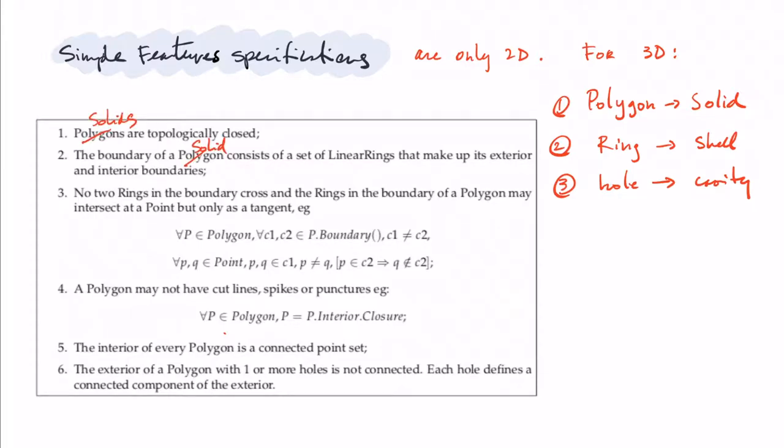Polygons become solids, rings become shells, and then a hole becomes a cavity. And then if we just replace this, and we read the six assertions, then we can know exactly how different shells can interact in 3D.